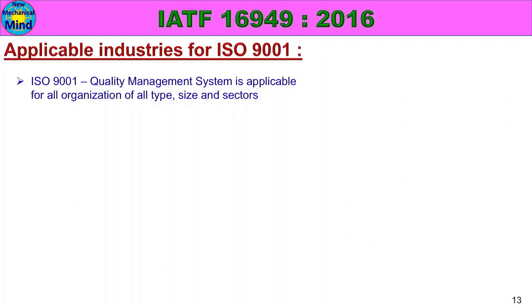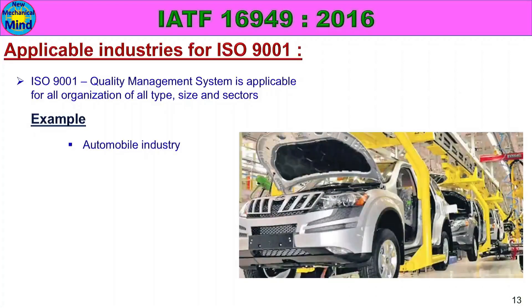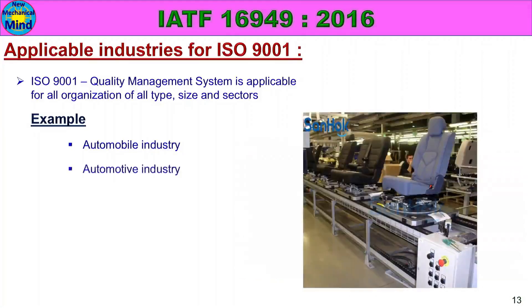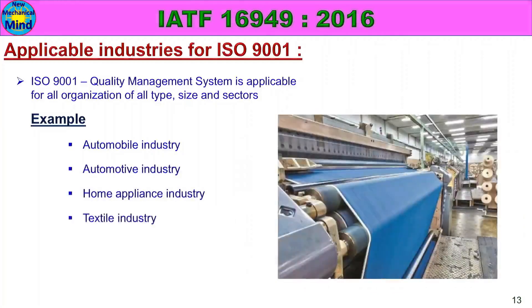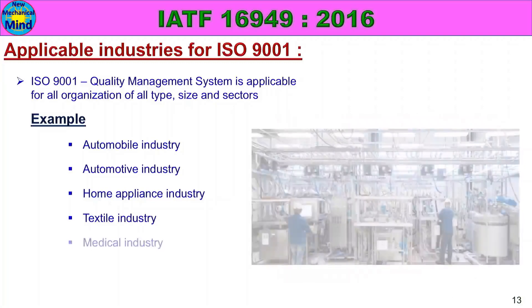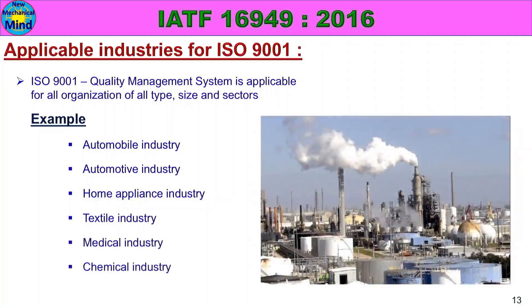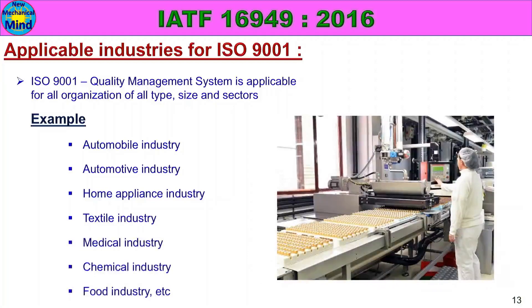Applicable industries for ISO 9001: The ISO 9001 Quality Management System is applicable for all organizations of all types, sizes, and sectors. Examples include: Automobile Industry, Automotive Industry, Home Appliance Industry, Textile Industry, Medical Industry, Chemical Industry, Food Industry, and more.